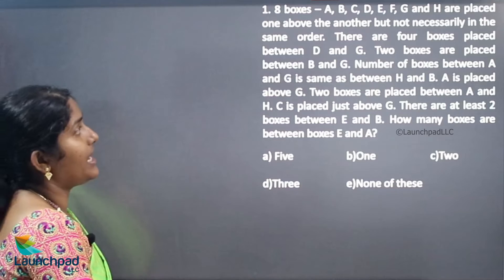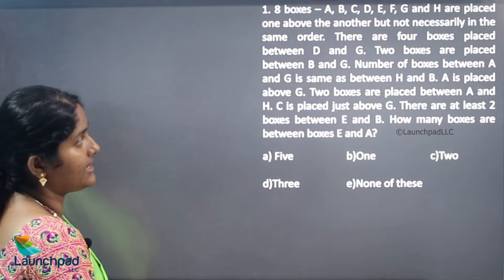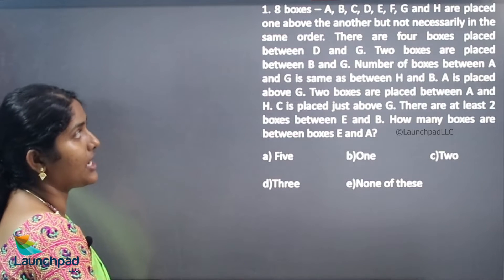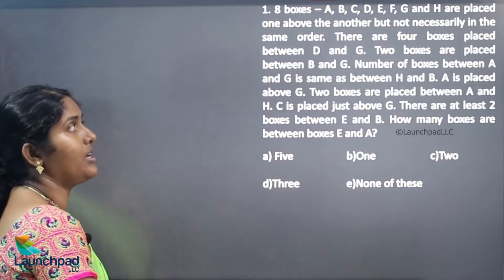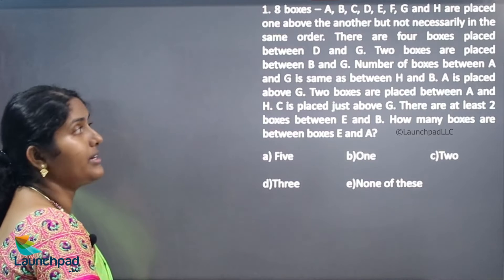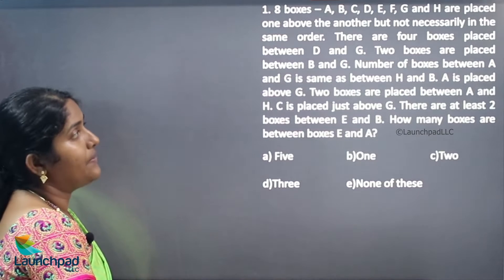Hello everyone. In this video we are going to see the next type of puzzle question. There are 8 boxes A, B, C, D, E, F, G and H placed one above the other but not necessarily in the same order.